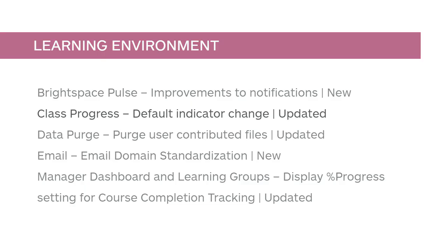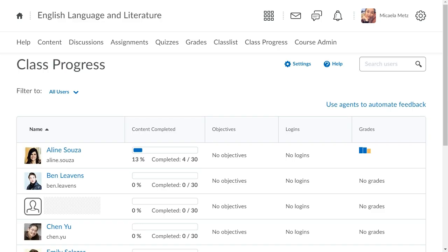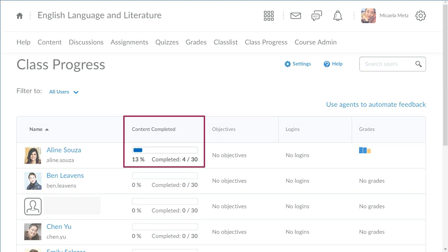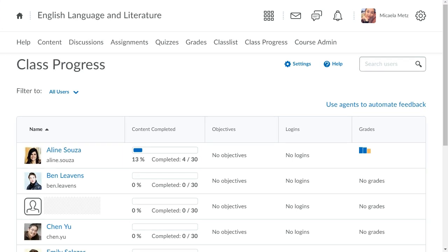In Class Progress, the default Content Visited Indicator is switching to the Content Completed Indicator. This change applies to all users who are currently using the Content Visited Indicator or default settings. From Class Progress, the new Content Completed Indicator graph displays. To opt out of this change, edit your default settings.